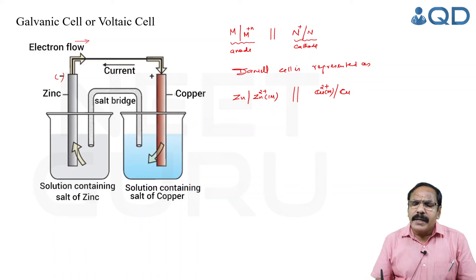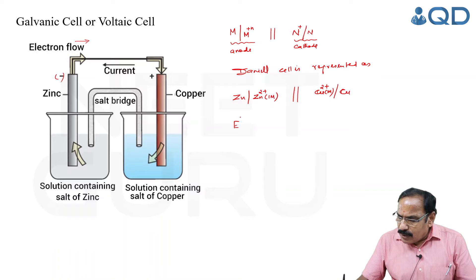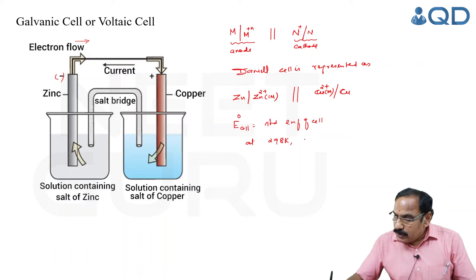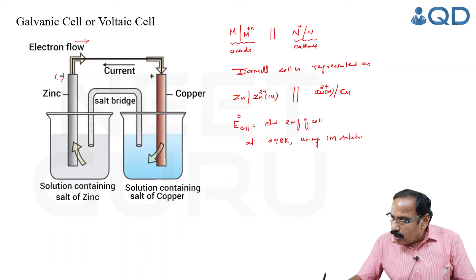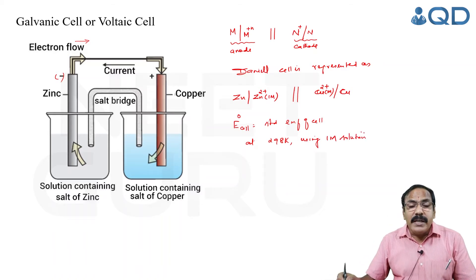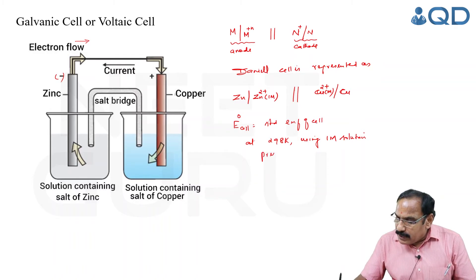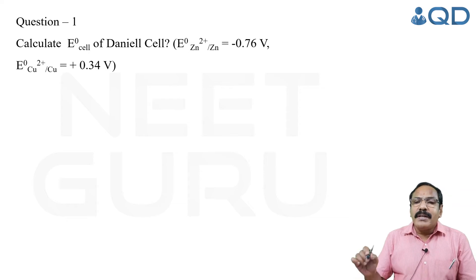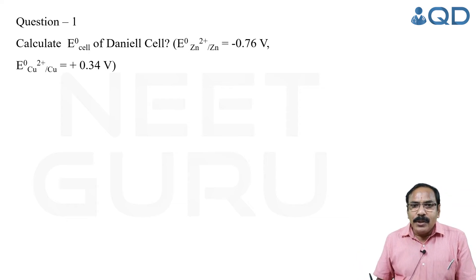Standard EMF, denoted E⁰, is called the standard EMF of the cell. It is measured at 298 K, using a one molar solution. If any gases are evolved, the pressure is maintained at one bar.